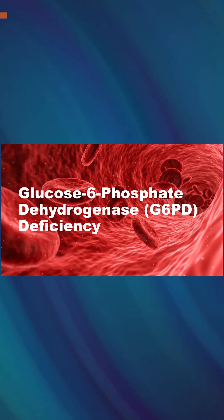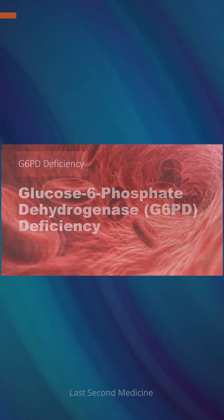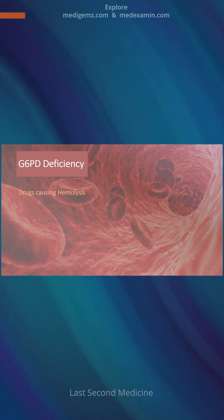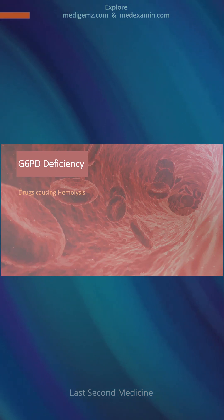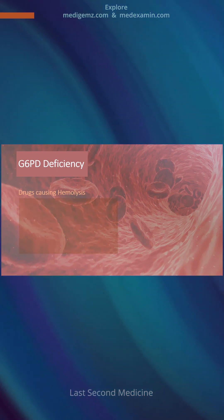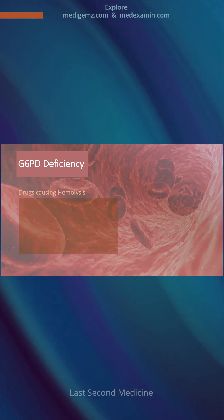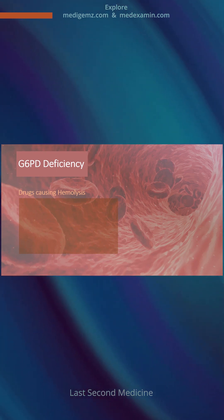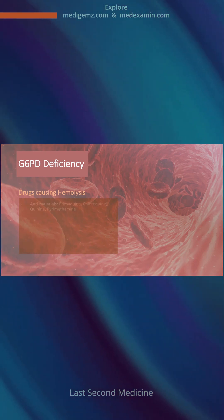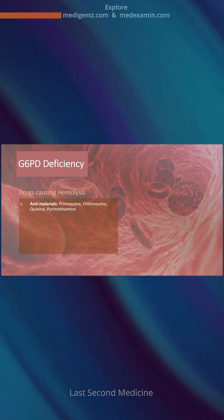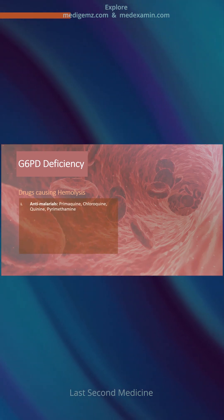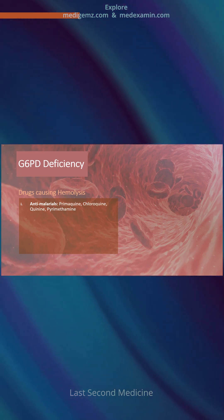Glucose-6-phosphate dehydrogenase deficiency — which drugs are implicated in precipitating a hemolytic crisis. Drugs causing hemolysis in G6PD deficiency include antimalarials like primaquine, chloroquine, quinine, and pyrimethamine.